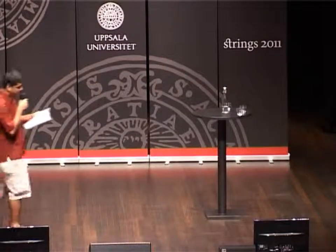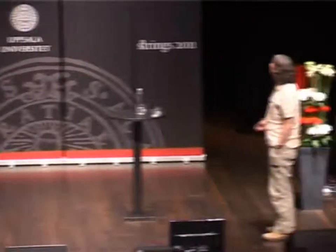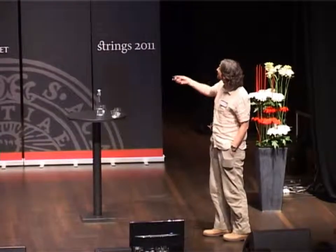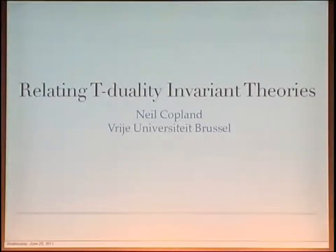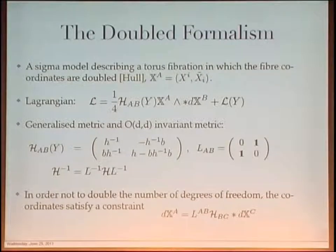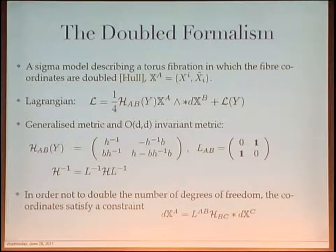Our next speaker is Neil Copeland from Brussels, with a talk on 'Relating T-Duality Invariant Theories.' There is a sigma model called the doubled formalism — a sigma model with a torus fibration where the fiber coordinates are doubled. This formulation is due to Hull. The ordinary coordinate x is joined by the dual coordinate x-tilde. The action is written in terms of a generalized metric H, and a key property of H is that raising indices with L, the O(d,d)-invariant metric, gives the inverse of H. Here g is the metric on the fiber and b is the anti-symmetric gauge field.